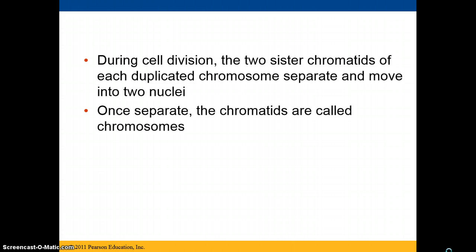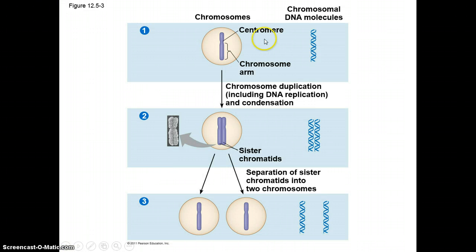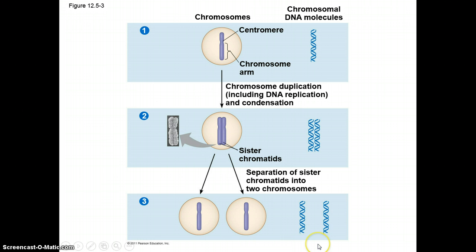When the cell actually divides, the two sister chromatids of each duplicated chromosome separate and move apart into two nuclei in the two new cells that are formed. Once those chromatids separate, we refer to them again as chromosomes. The chromosome duplicates, we call the point of attachment the centromere, and after the two sides divide, each is called a sister chromatid — but once they divide, we again refer to them as chromosomes.